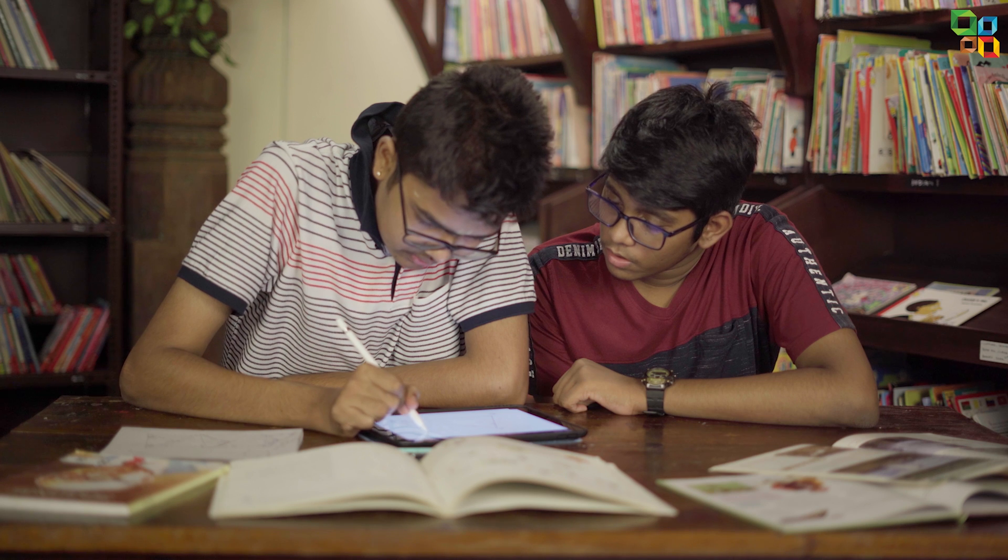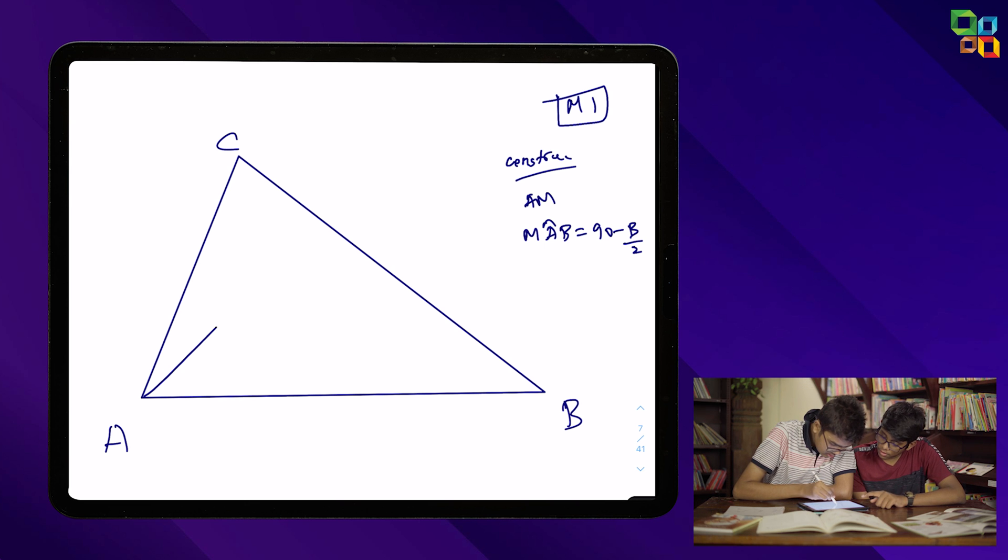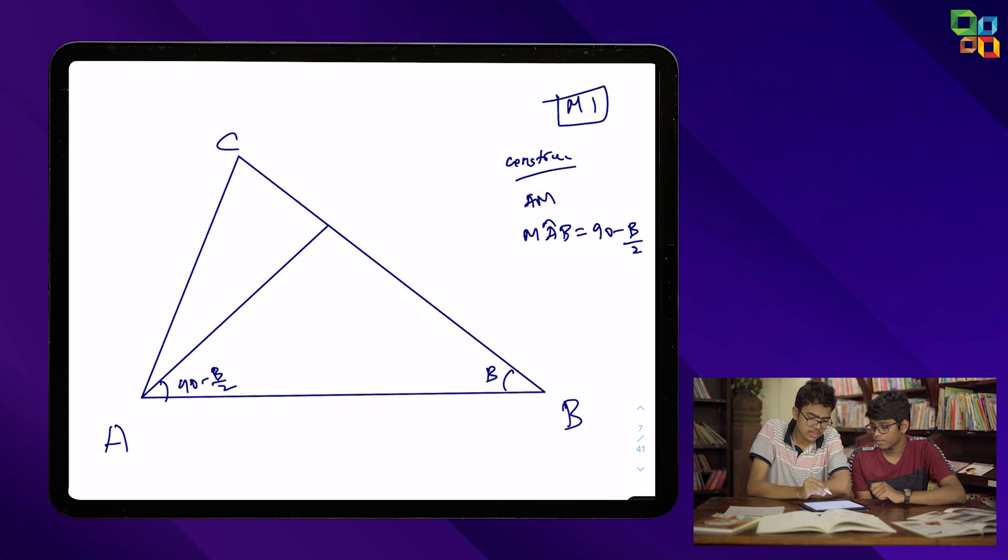In other words, let me just construct AM. So construction: we construct AM such that angle MAB is 90 minus B by 2. Then this is B. Correct. So by angle sum, even this comes out to be 90 minus B by 2. So it automatically becomes isosceles.